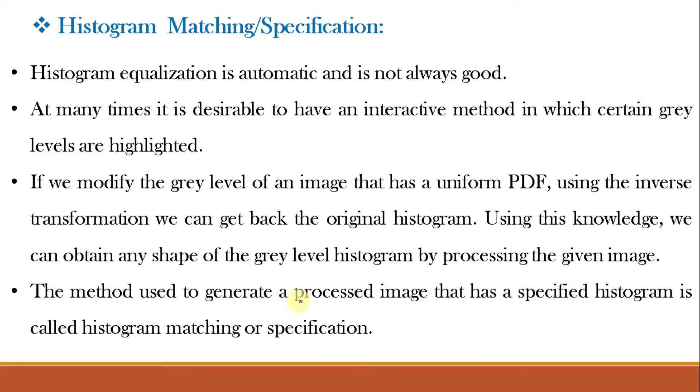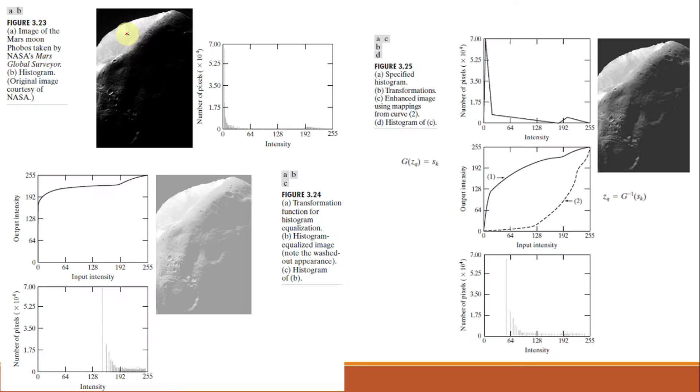Exploiting this knowledge, we can obtain any shape of the gray level histogram by processing the given image. The method used to generate a processed image that has a specified histogram is called histogram specification or histogram matching.